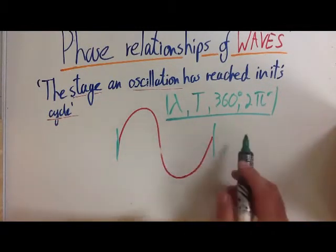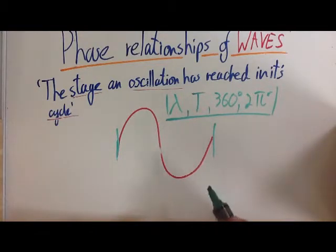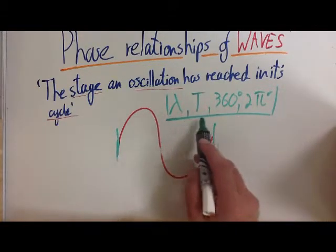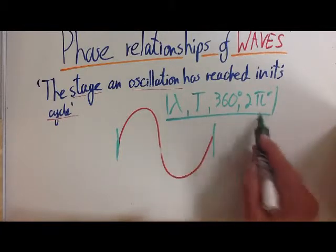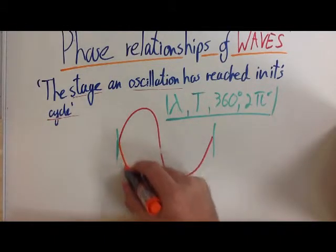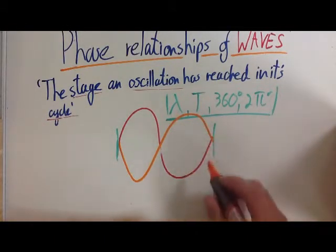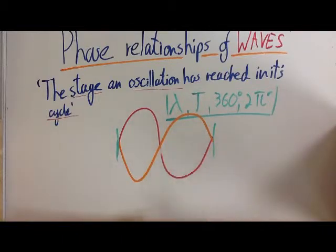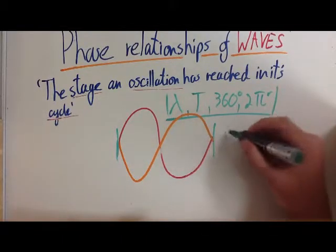So if the wave, if the path difference, which you can also see a video about on this channel, is equivalent to either the time period, the wavelength, 360 degrees or two pi radians, then they will arrive in phase. But if the waves are anti-phase, it means they're arriving at exactly the opposite points in the cycle, like these two waves here, then they will superpose.